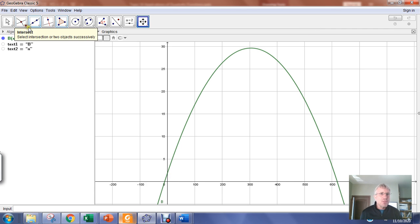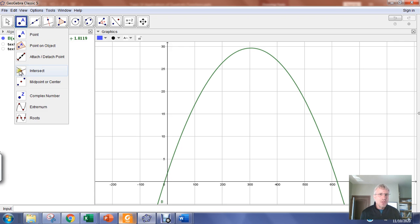So to find the intercepts, probably the easiest way to do it is to go into the point menu here and then find the intersect option.